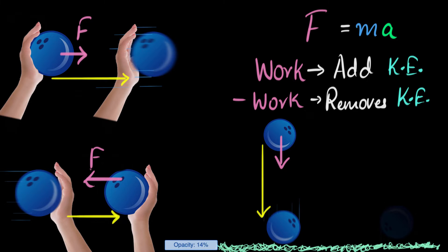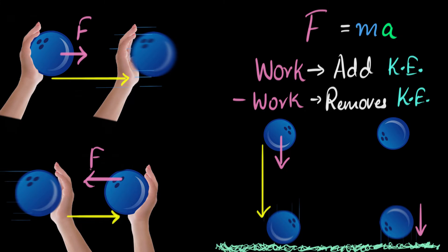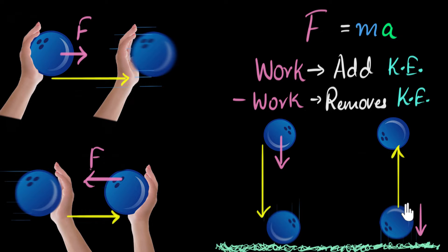Similarly, if you take that same ball and throw it up, as the ball goes up it slows down. Gravity is still pushing down on that ball — remember, gravity always puts a force downwards — but this time the ball is going in the opposite direction. So gravity is doing negative work, and as a result gravity is removing kinetic energy, which is why the ball is slowing down. Pretty cool, thinking in terms of work and energy!